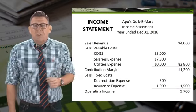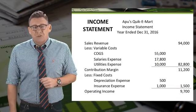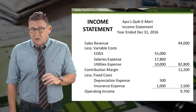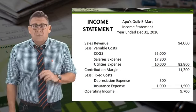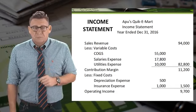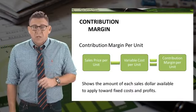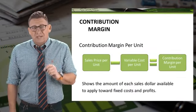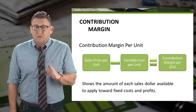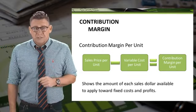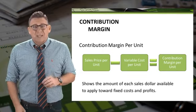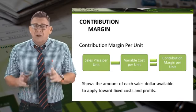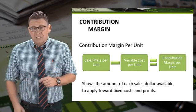Here is an example of the contribution margin income statement. Let's learn how to use the information on the contribution margin income statement to make business decisions. To start with, let's learn this simple yet useful concept called contribution margin per unit. It is calculated by taking the sales price per unit and subtracting the variable cost per unit.